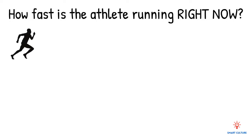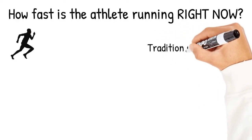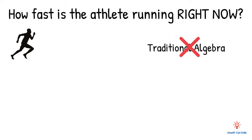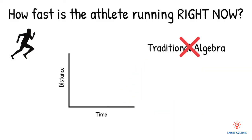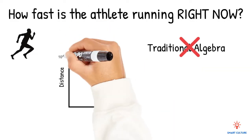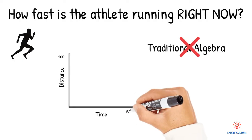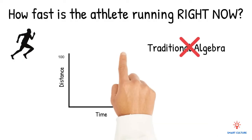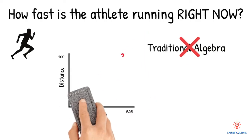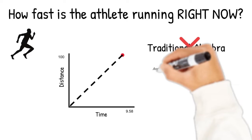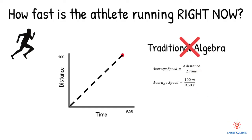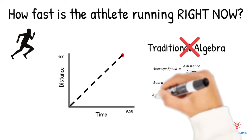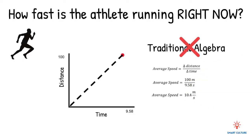You might wonder why we cannot use traditional algebra to solve this problem of how fast Usain Bolt is going right now. Let's take a look at this graph. This athlete Usain is able to travel 100 meters in 9.58 seconds. Since we have the time and the distance, we can determine his average speed. Average speed equals the change in distance over the change in time — 100 meters over 9.58 seconds — so the answer is 10.4 meters per second.